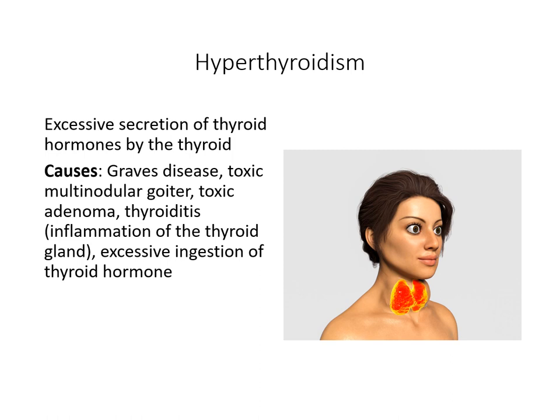Hyperthyroidism is the opposite of hypothyroidism — excessive secretion of thyroid hormones. One of the most common causes is an autoimmune disorder known as Graves' disease, where clients have abnormal stimulation of the thyroid gland creating an excessive amount of thyroid hormone. It affects women about eight times as much as men, with typical onset around ages 20 to 40. It can appear after severe emotional upset, stress, or infection, but this disease is not yet completely understood.